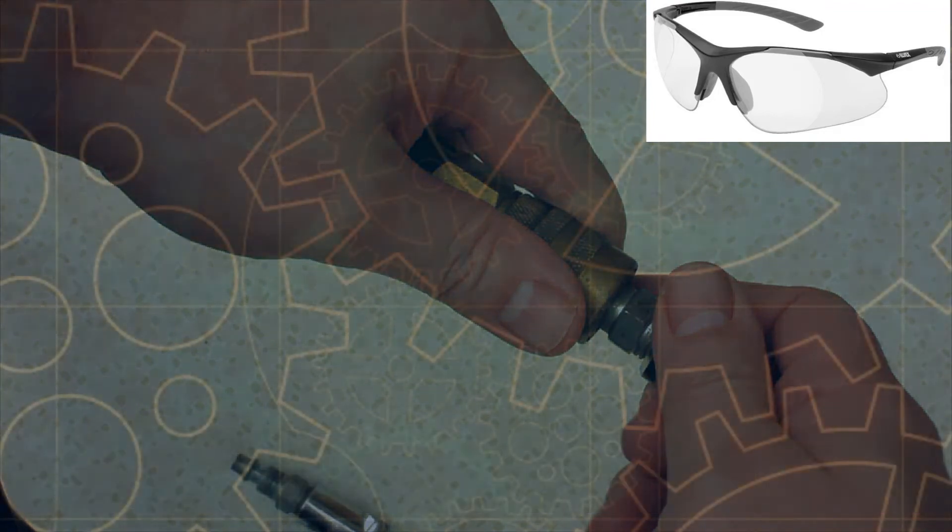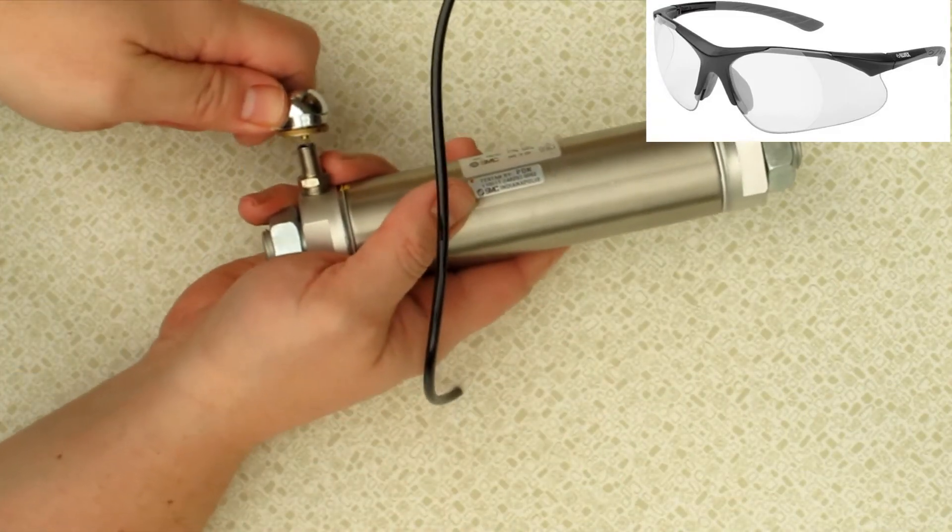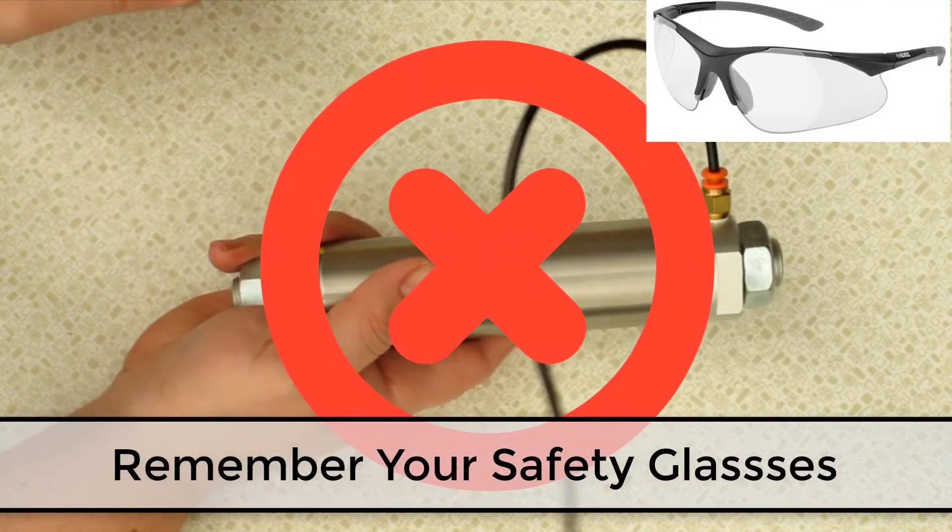Okay, so now that we have our air fitting onto the compressor, let's go ahead and try to put some air in the tank. Here I have the tank and I have some hose attached to it. Let's see how this works. Oh, hey, no, that's no good.